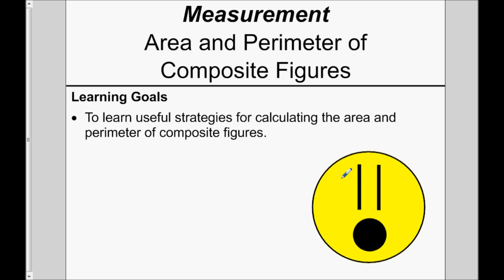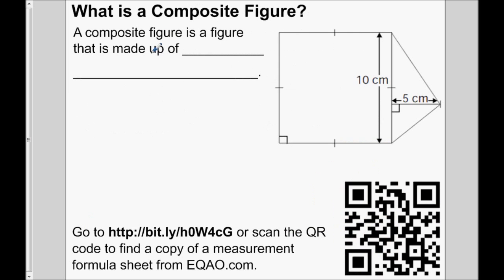This is a composite figure, and you'll see why in a second. Hopefully by the end of the video your face doesn't look confused — it looks more like a happy face. A composite figure is essentially just a figure that's made up of two or more shapes, like this one over here — we've got a square and a triangle.